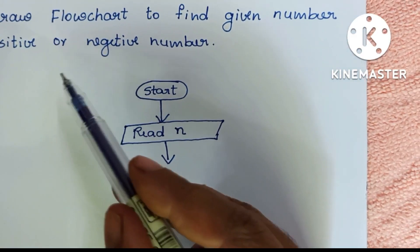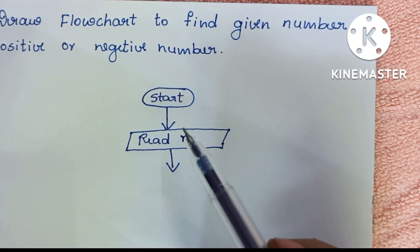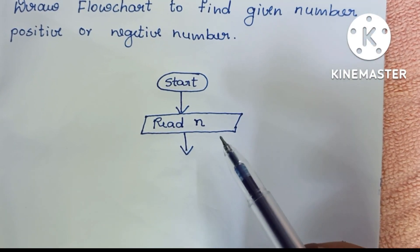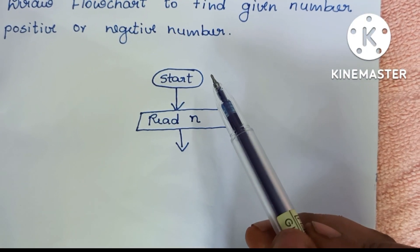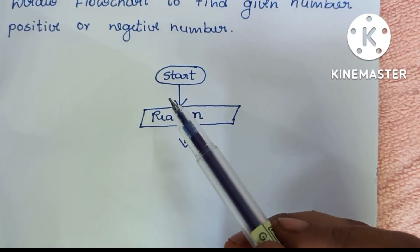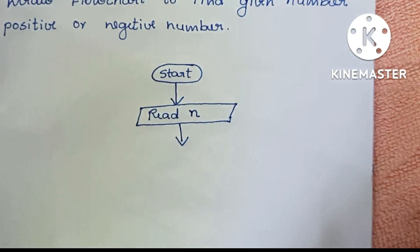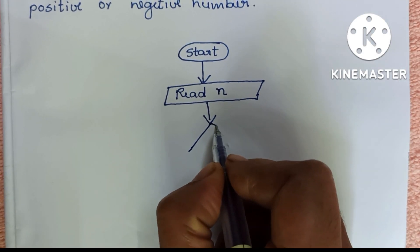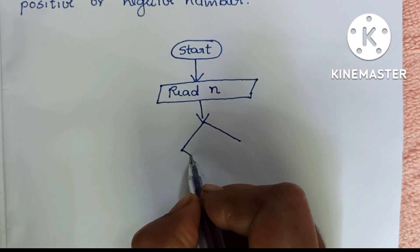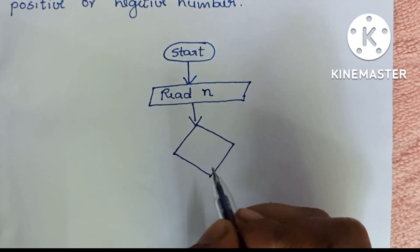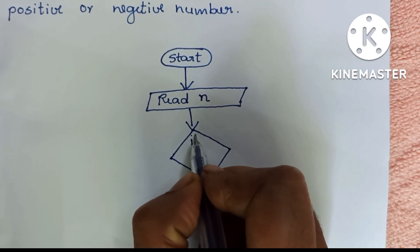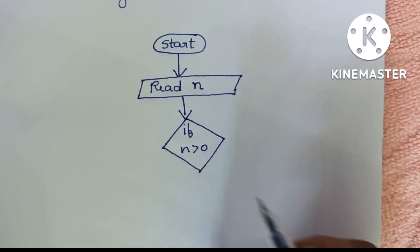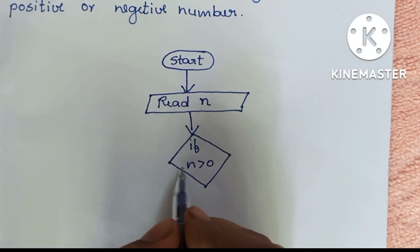To find whether a given number is positive or negative, we have to compare the number with zero. If a number is greater than zero, it is called a positive number. If a number is less than zero, it is a negative number. Comparison is always done within a diamond shape. So we have to draw a diamond shape and write: if N greater than zero.